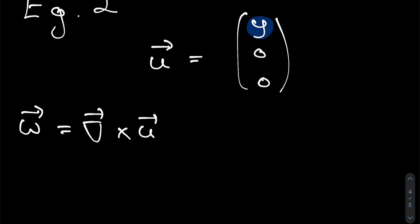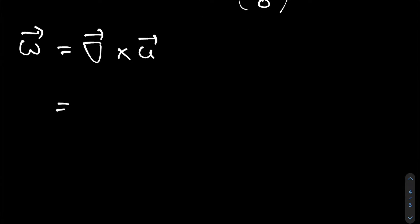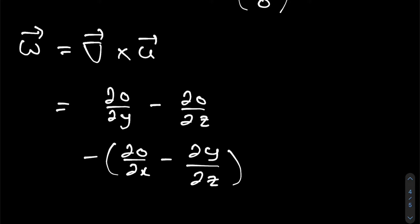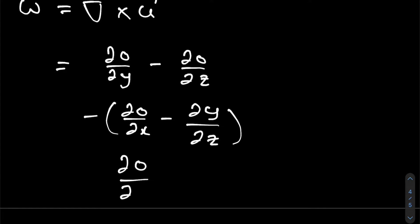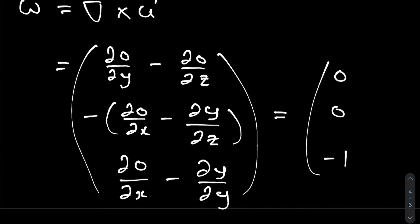Let's compute the vorticity of this flow. And I'm going to work through this a bit faster than the last one, but it's the same principle. This is just going to be d0 dy minus d0 dz for the x component, negative d0 dx minus dy dz, and d0 dx minus dy dy for the z component. And using the same tricks as before, this evaluates to 0, 0, negative 1. That's very strange.